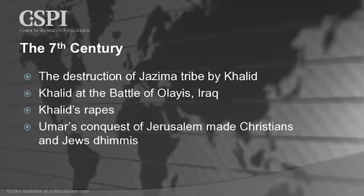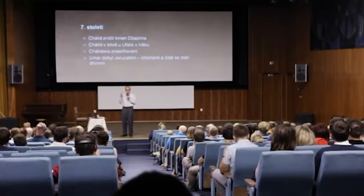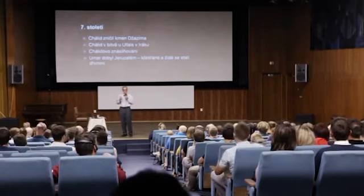Jerusalem fell and Christians and Jews were made dhimmis — semi-slaves, second-class subjects. In the next century, I start by noting this is the first century of the Golden Age. Surely all of you have heard of the Golden Age of Baghdad. The next few centuries I'm going to show you not only in quantity, but the quality of what the expansion of the so-called Golden Age actually involved.